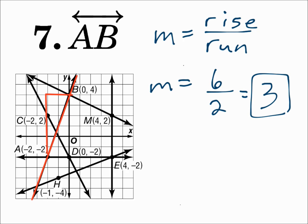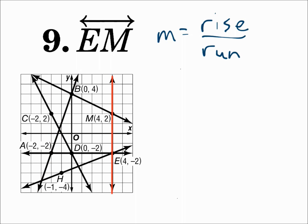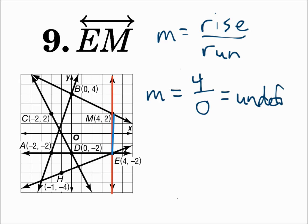Rise is vertical: if it's up, it's positive; if it's down, it's negative. Run is horizontal: if it's right, it's positive; if it's left, it's negative. Make sure it's reduced. Line EM is a vertical line. From E to M, that's a rise of 4, but you don't run any — you don't go left or right because it's vertical, so the run is 0. And 4 divided by 0 is undefined. A vertical line has an undefined slope. When the 0 is under, it's undefined — that's how you remember.